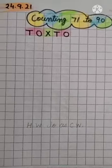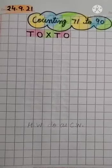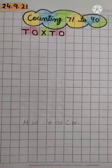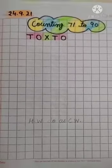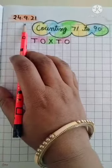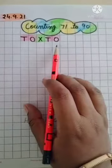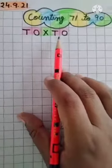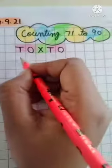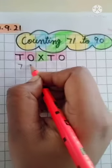Welcome to our math class. Today we will learn to write counting 71 to 90. Today's date is 24 September and year is 21. So let's start counting from 71. We will write the tens number under T and the ones number under O.